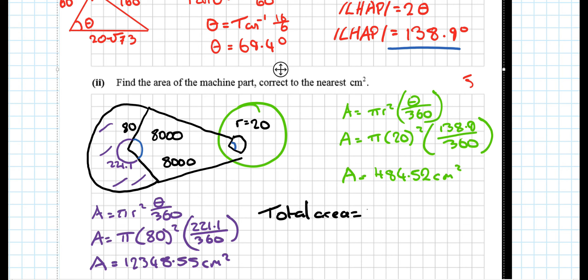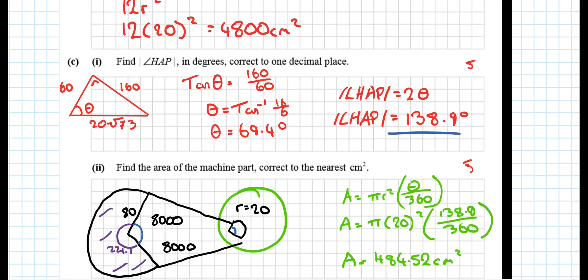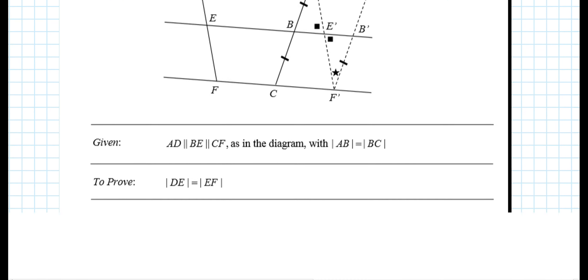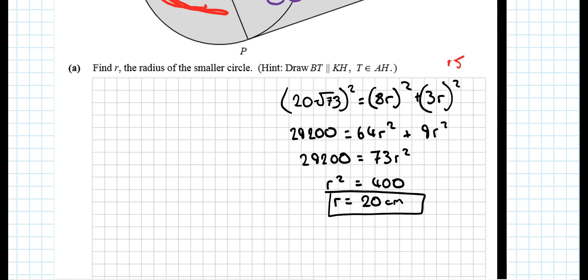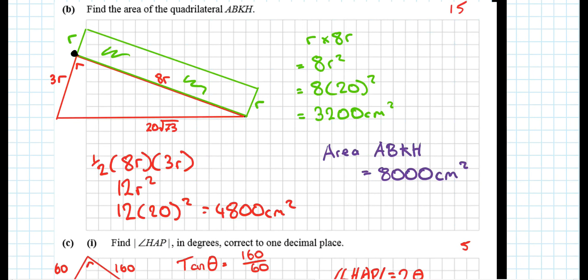So the total area is 8,000 plus 8,000 plus 484.52 plus 12,348.55. And that works out to be 28,833 centimeters squared to the nearest centimeters squared. So actually a really nice question in total. And it was 15, 15, 5 and 5. So you should be pretty happy to be honest. Yeah, pretty happy with the whole question. It's quite nice. Hopefully you found the video useful anyways.